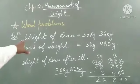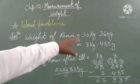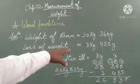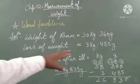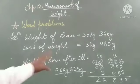So first, my statement: weight of Renu equals 30 kg 360 grams. Loss of weight is equal to 3 kg 485 grams. Then last statement: weight of Renu after illness.